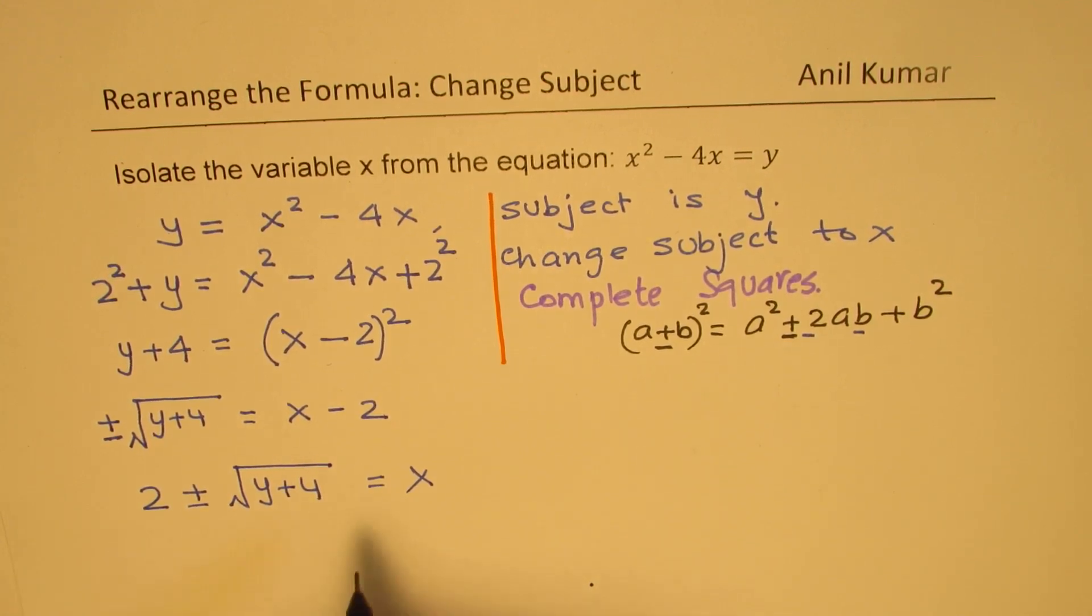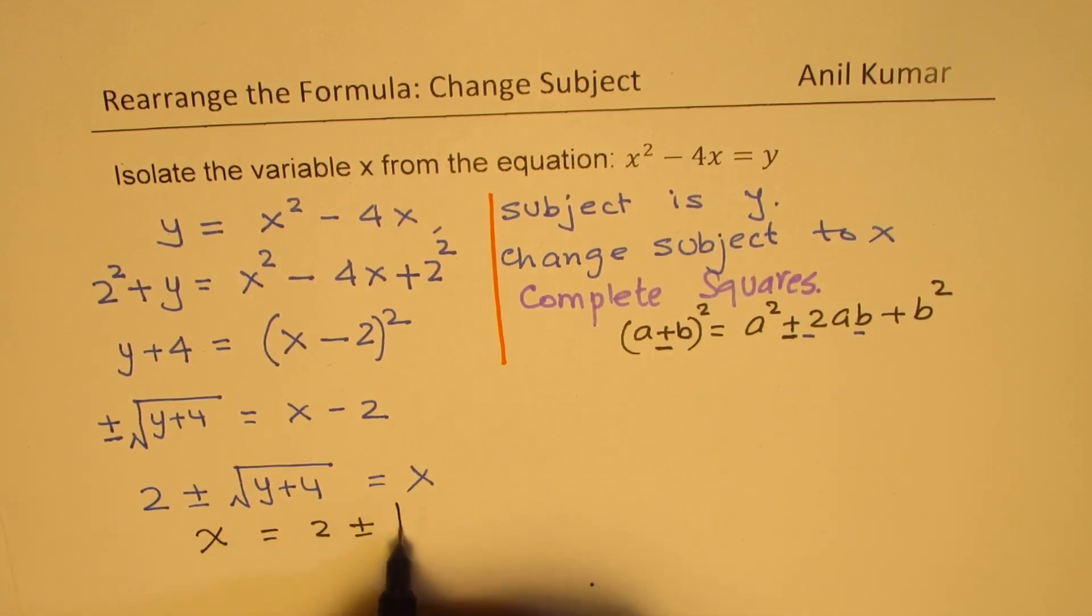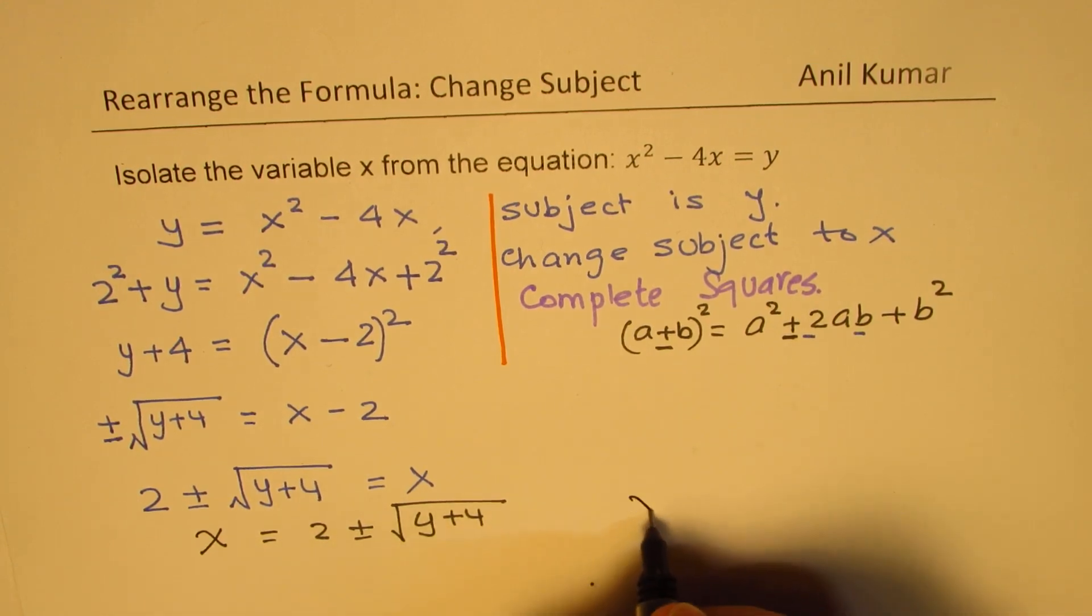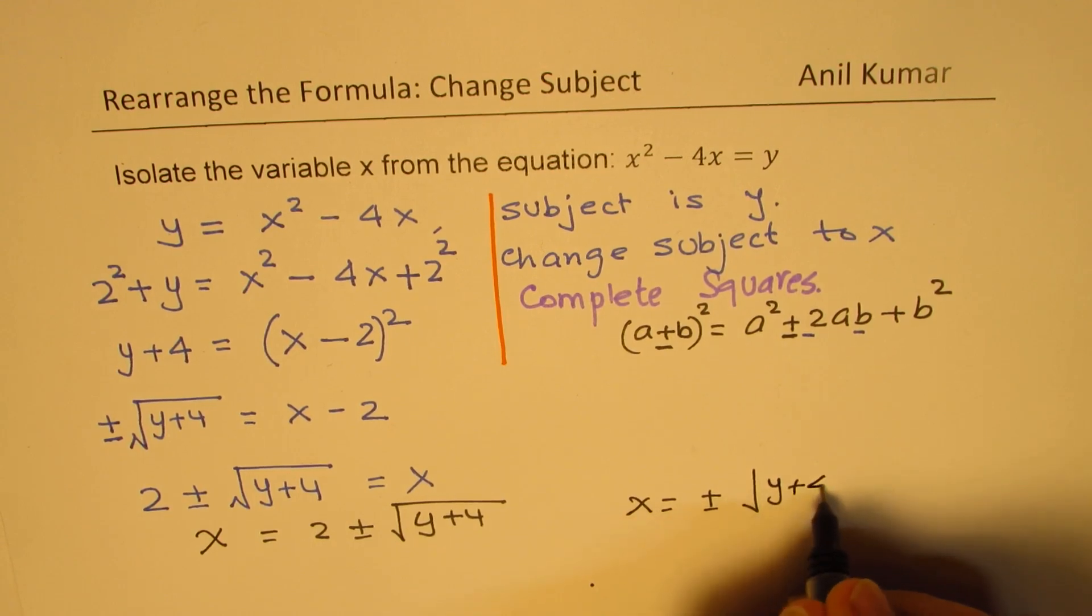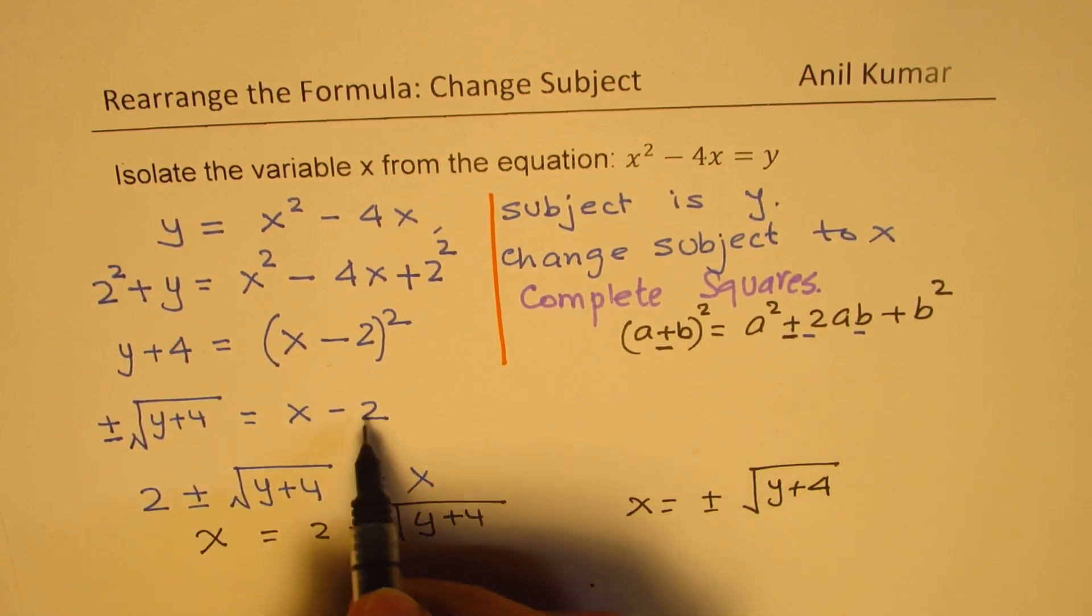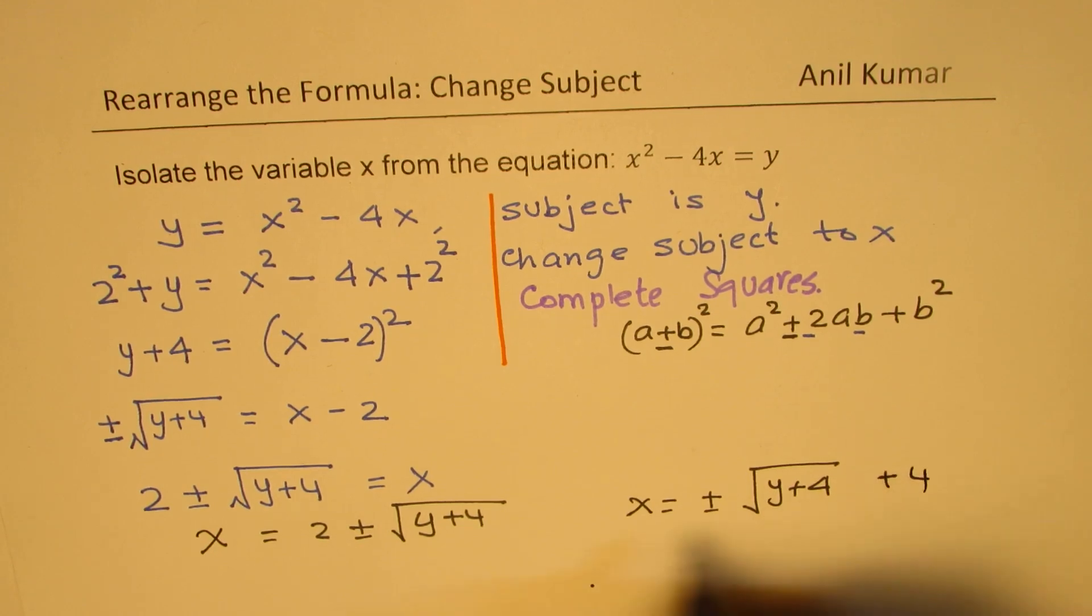So in this way, we have changed the subject and we have written x as the subject. x is equals to 2 plus minus square root of y plus 4. You could always write this also as x equals to plus minus square root of y plus 4 and plus 2. Either way, both are one and the same thing.